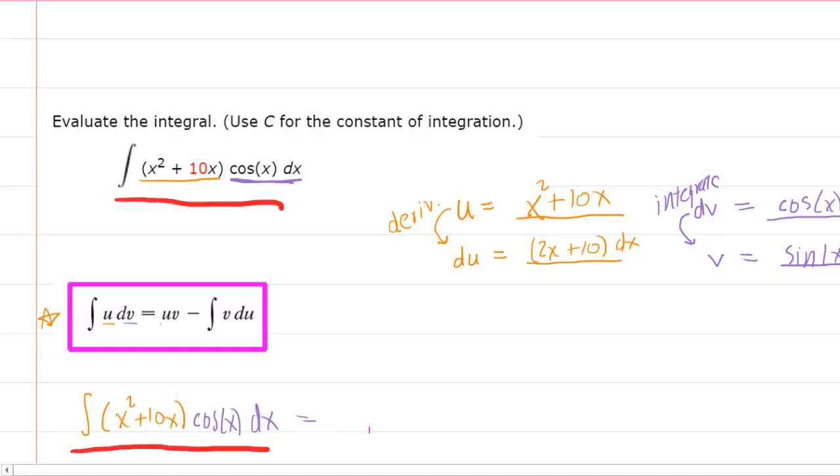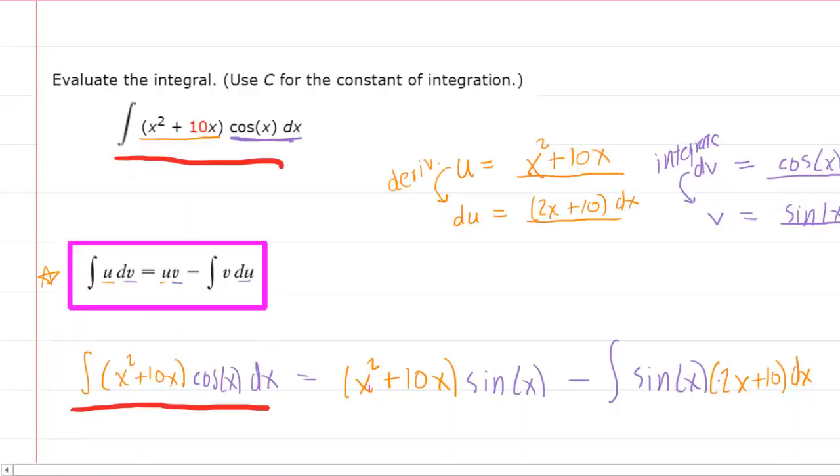On the right hand side, we have u, which again was x² + 10x, being multiplied by v. We determined v to be the sine of x. And then we're going to subtract another integral of v again. So you put the sine of x right here, multiplied by your du. And in this case, the du was 2x + 10 dx.